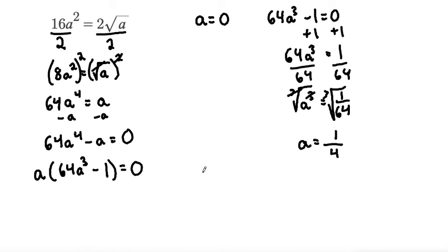Let's plug these in. If we plug in 0, we get 16 times 0 squared equals 2 times the square root of 0. 0 squared is 0 and 0 times 0 is 0. The square root of 0 is 0 and 2 times 0 is 0. So this one checks out.